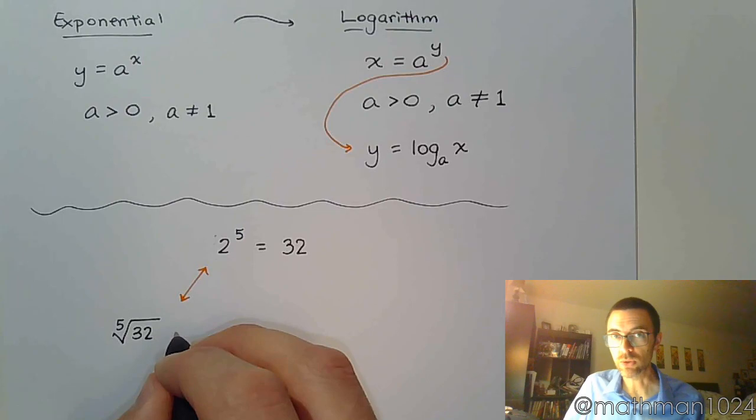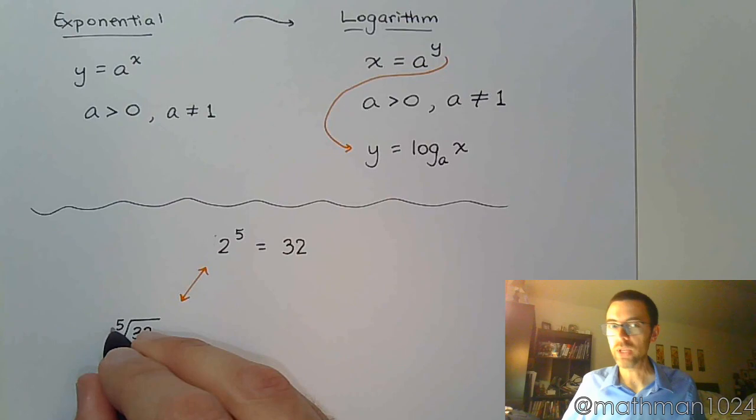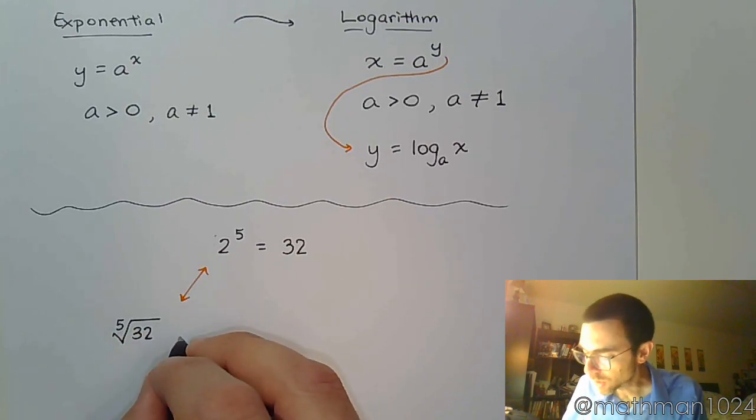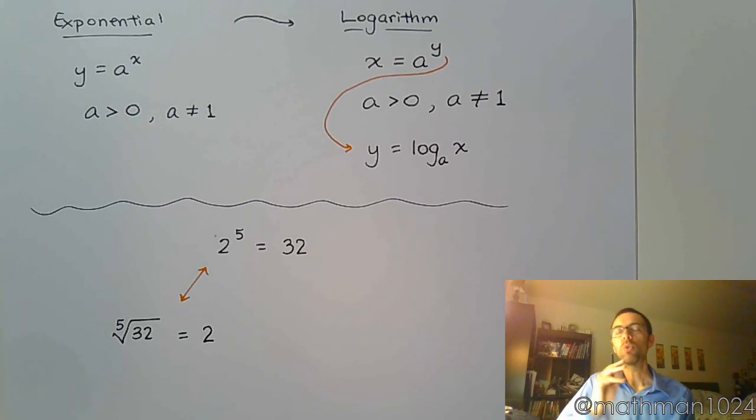So when you have a radical, you know the answer 32, you know the power given by the index which is 5, you're looking for the base. So the base is 2. When we deal with radicals, you're looking for the base.